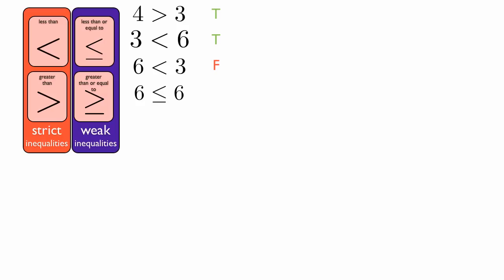Six is less than or equal to six is true because that's a weak inequality. Six is less than six is false because that's a strict inequality. It doesn't include itself.